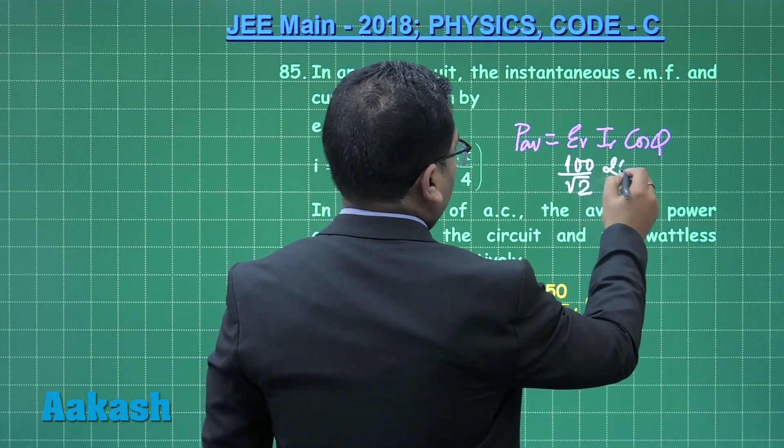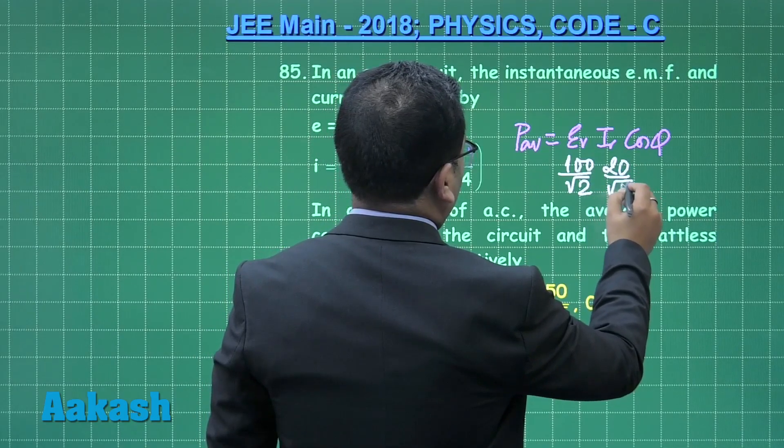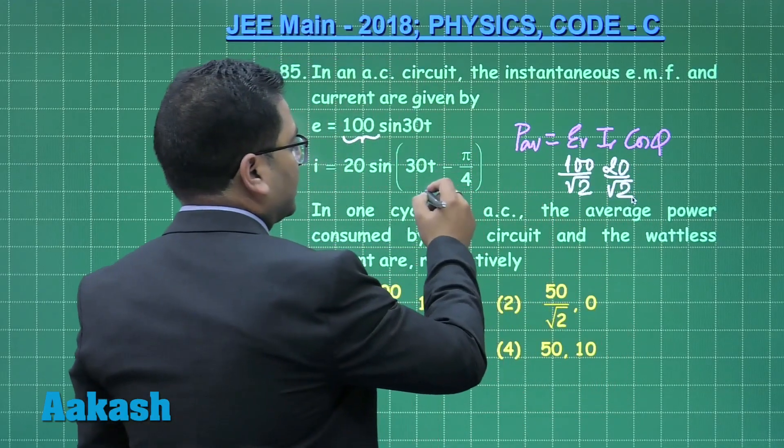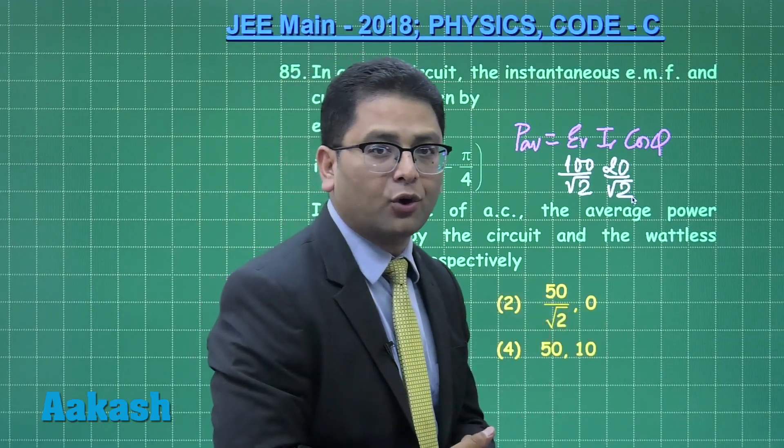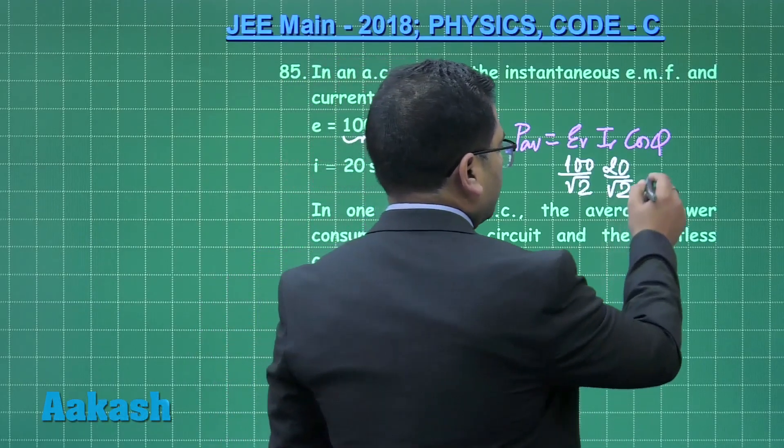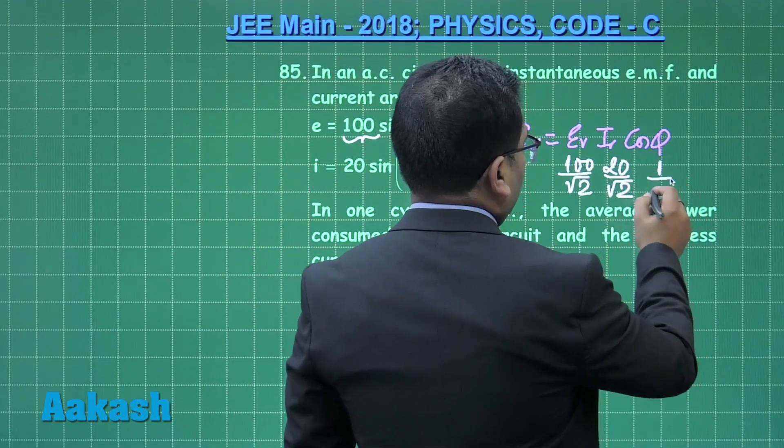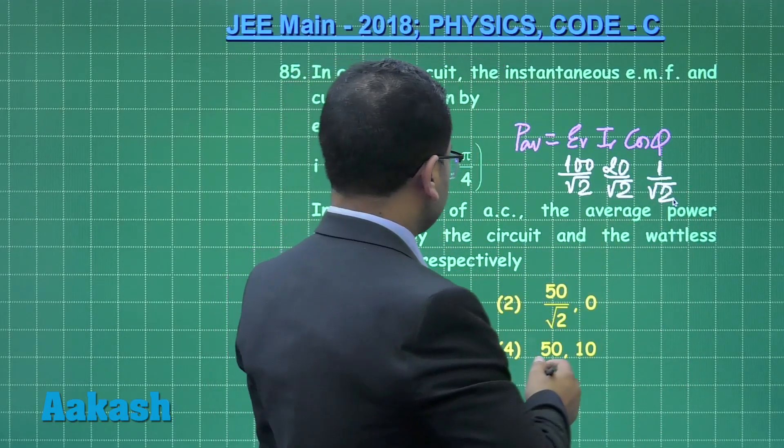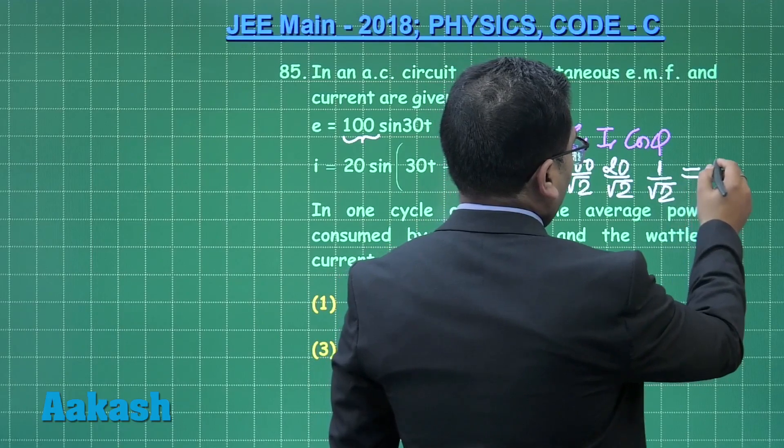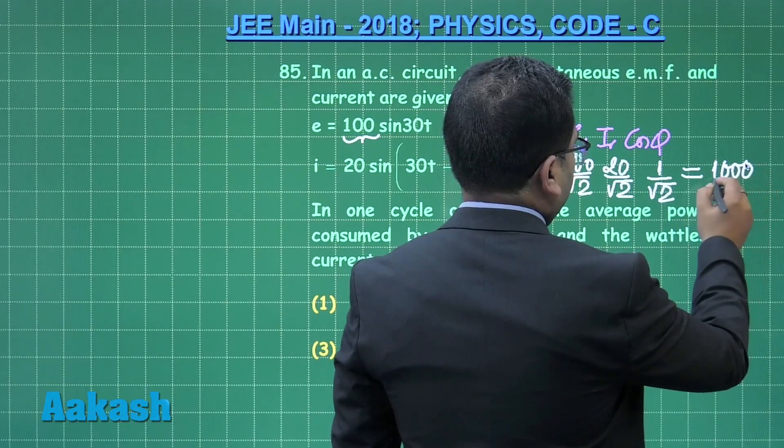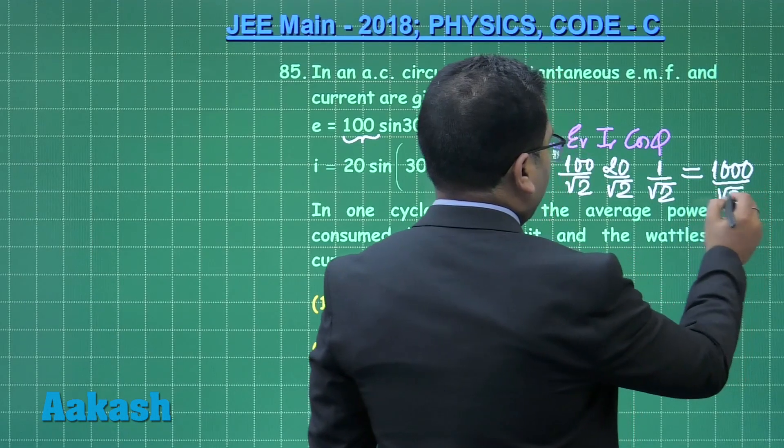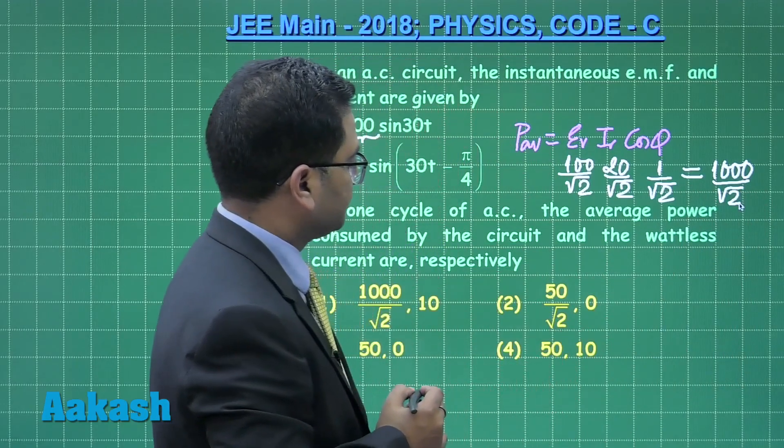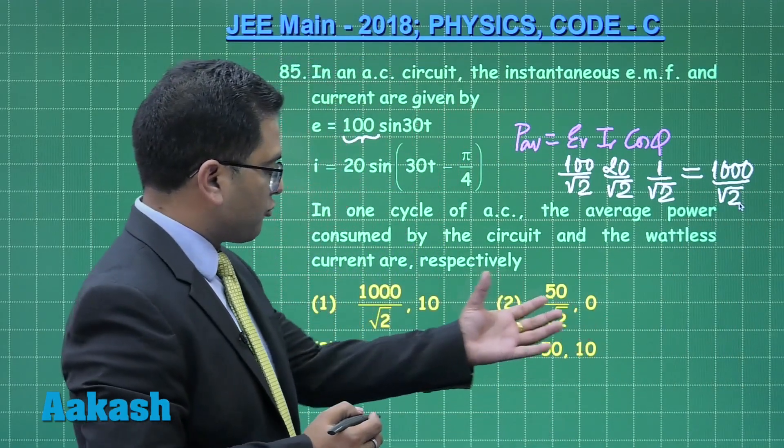And cos phi, the phase difference being pi by 4, so that is going to be 1 by root 2 again. So here the value what it comes is going to be straightway 1000 divided by root 2 watt is the average power for one cycle. Although straightforward, 1000 by root 2 is valid only in option number 1.